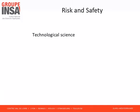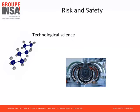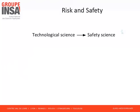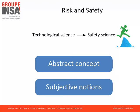Most scientific disciplines deal with tangible objects. Chemistry and biology handle molecules and components. Physics, mechanics and civil engineering study matter and materials. On the contrary, safety science deals with an abstract concept, that is, risk. Even if dramatic consequences of accidents affect people or material assets, and even if their causes concern real features such as toxic chemical products, safety and risk are subjective notions.